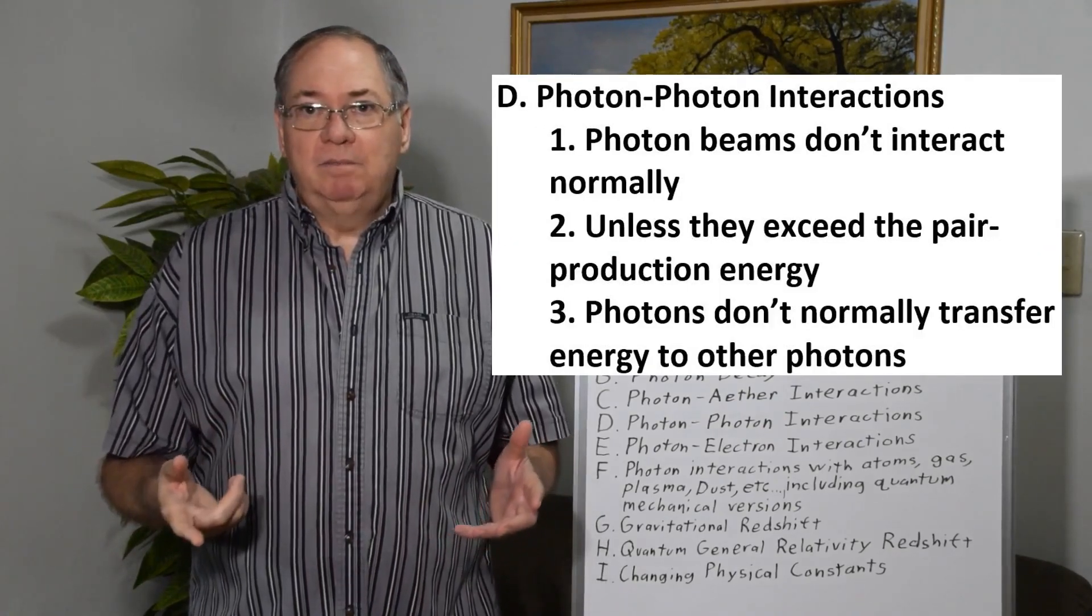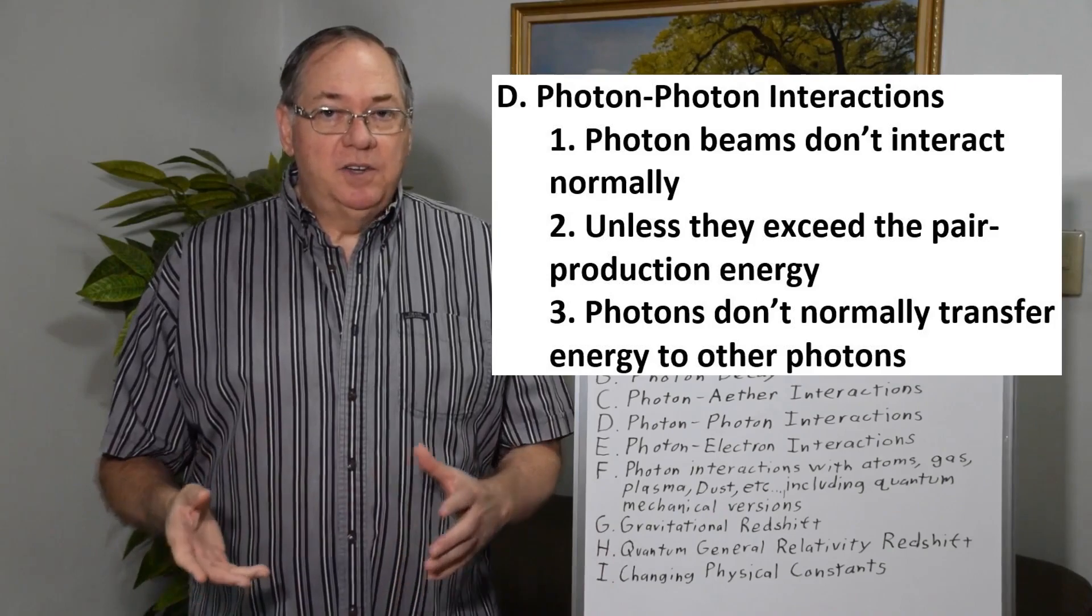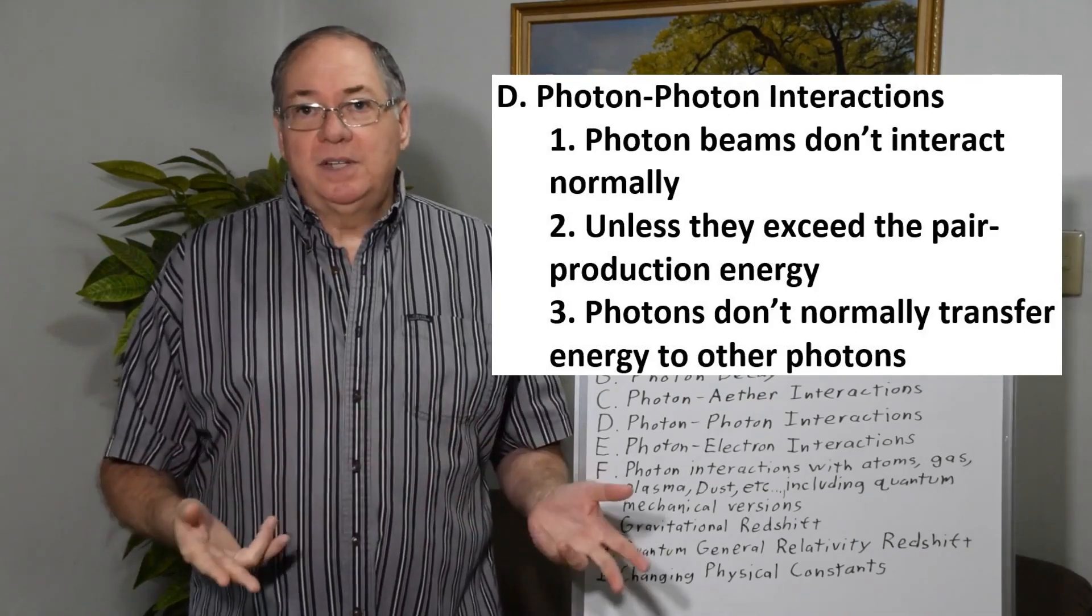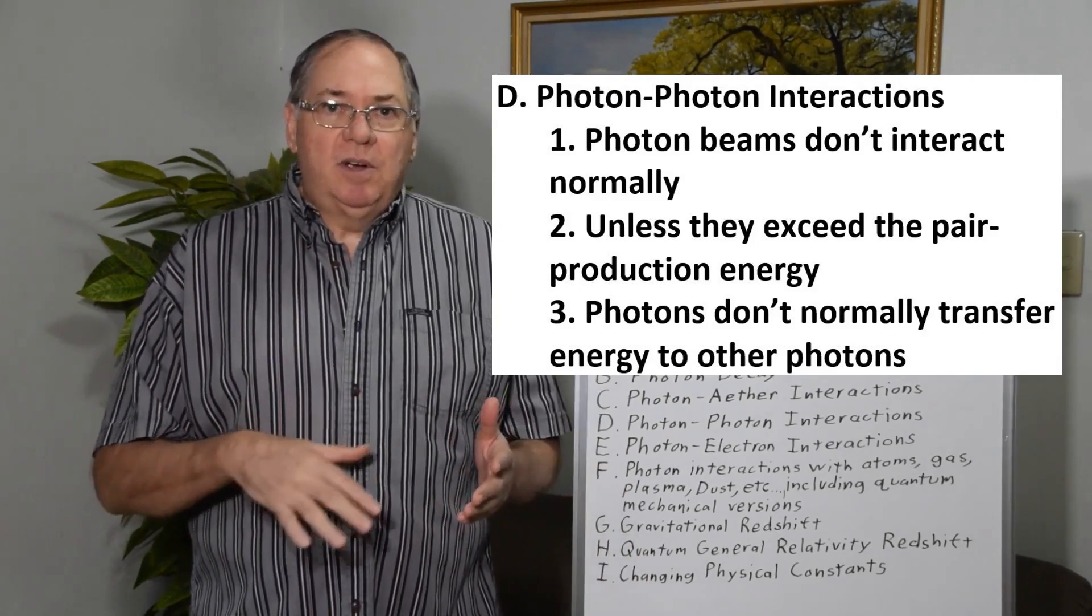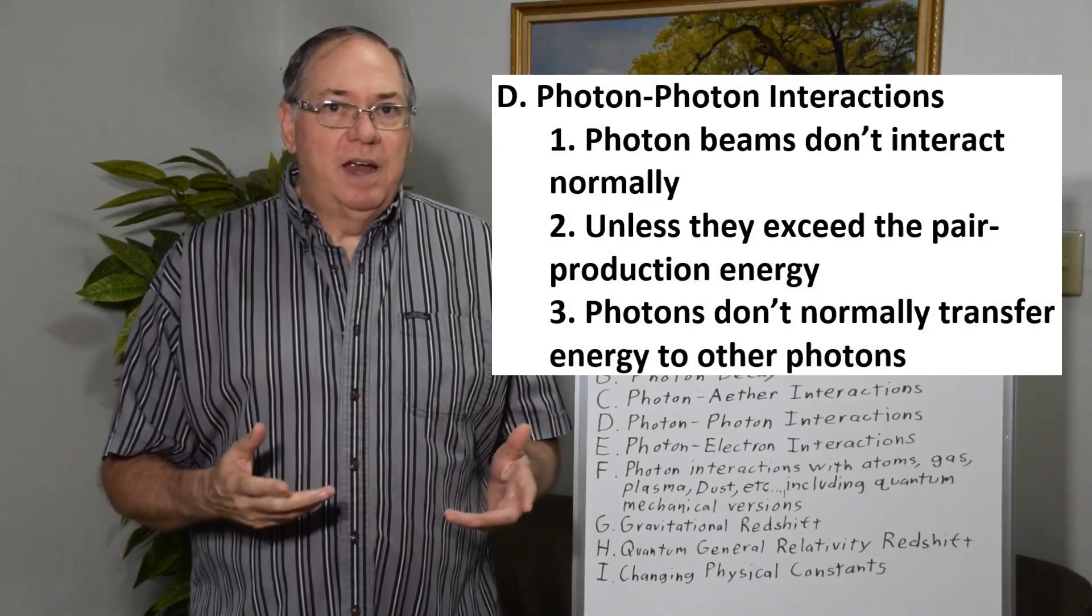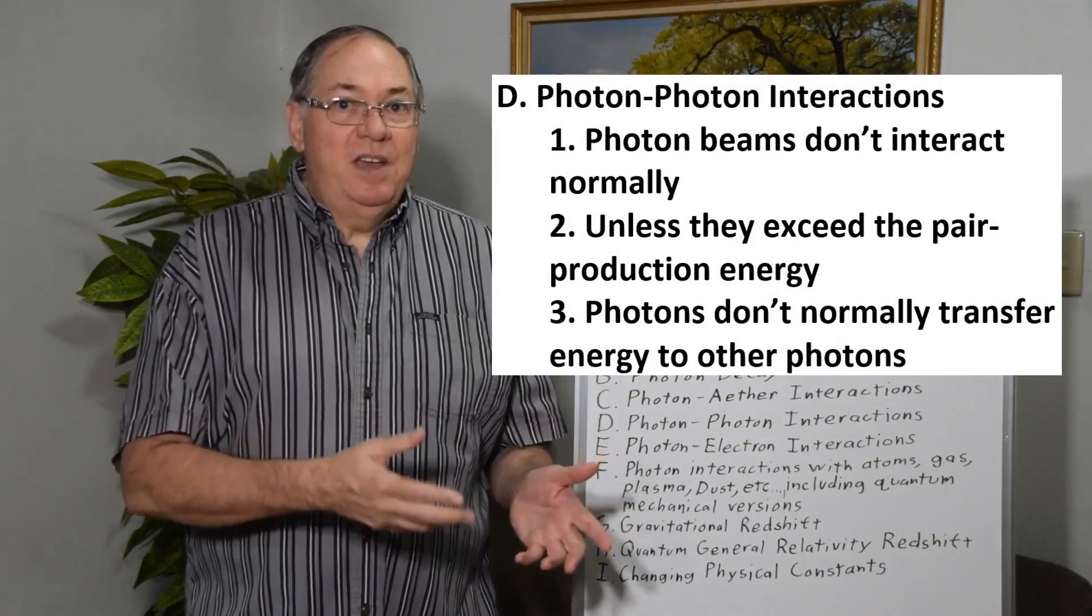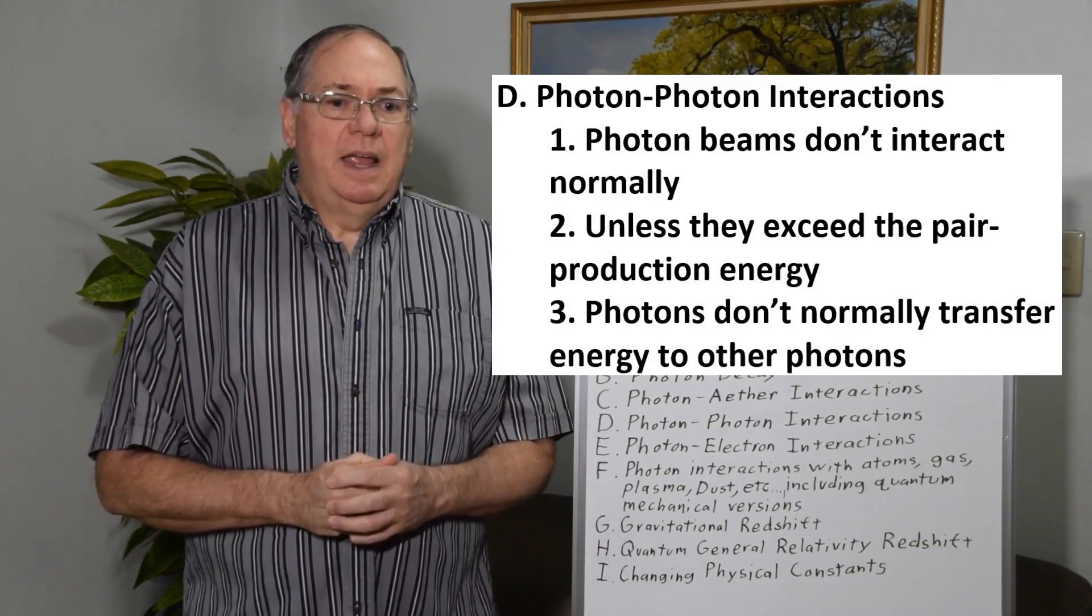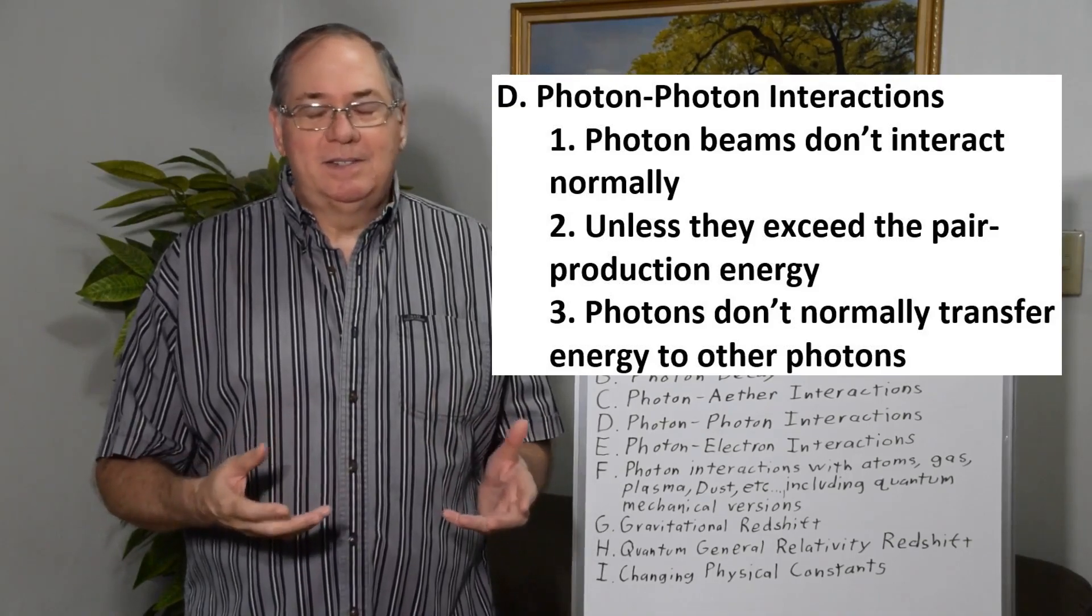The next big group is photon-photon interactions. We do know that photons of high energy can lose energy in a sea of other photons. But we also know that two photon beams can cross each other without interacting at all, and generally they don't interact. So unless you are across the threshold for the pair production energy for electron-positron pairs, you don't see a great deal of interaction between photons. And again, you have to come up with a mechanism for where does the energy go. Do these photons become excited? Do you produce new photons? And so again, these models tend to not work out without creating entirely new physics that's unknown to us.